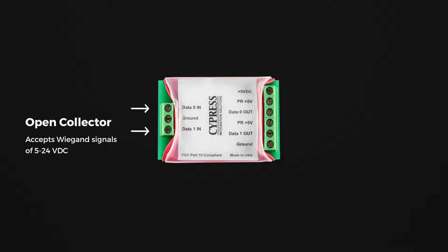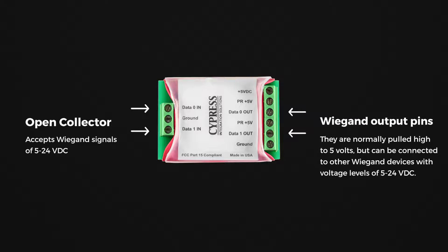The CVX OPTW needs to be powered with 5 volts DC in order to function properly. Connect your 5 volt power supply to the plus 5 volt DC and ground pins on the J2 header. Data Zero Out and Data One Out are both Wiegand output pins. They are normally pulled high to 5 volts but can be connected to other Wiegand devices with voltage levels of 5 to 24 volts DC.